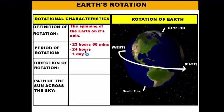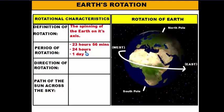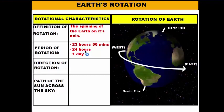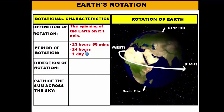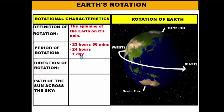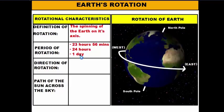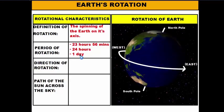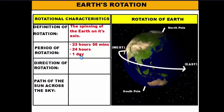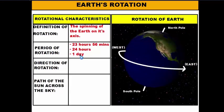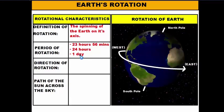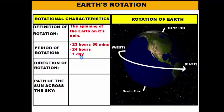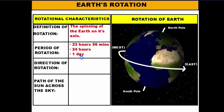It actually takes the earth 23 hours, 56 minutes, and some seconds to complete one rotation. However, we round that up to 24 hours, and as we know, 24 hours equals one day. So it takes the earth one day to complete one spin. When the calendar switches from Monday to Tuesday, it's because one complete spin of the earth has occurred. The earth will have 365 and one quarter rotations in a year.